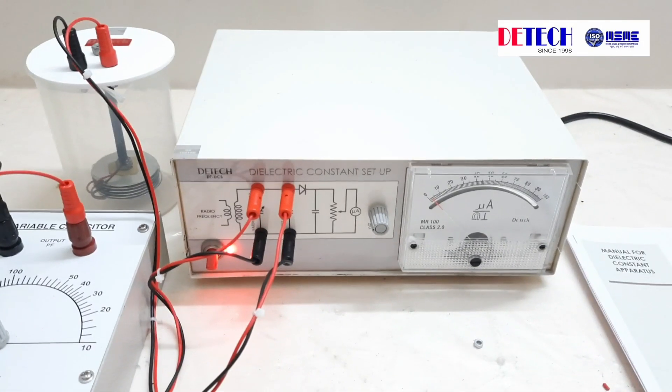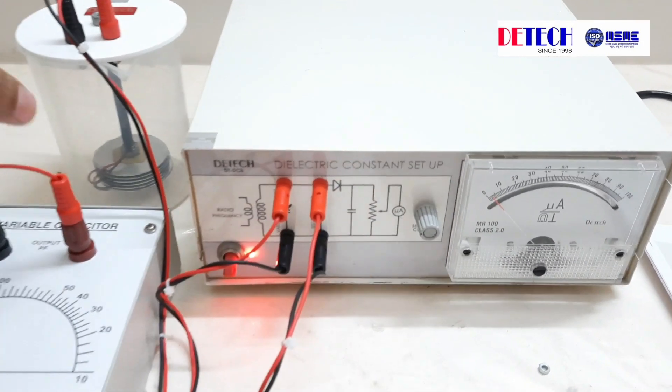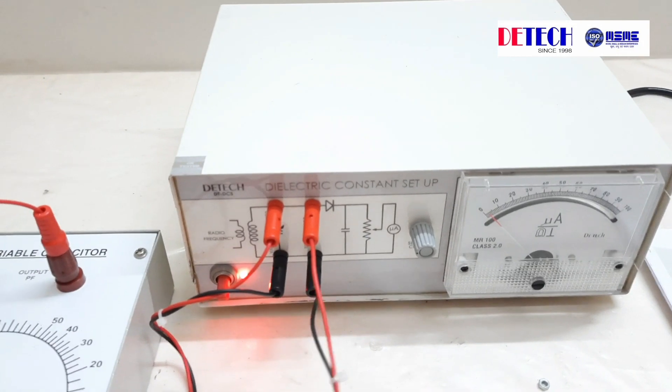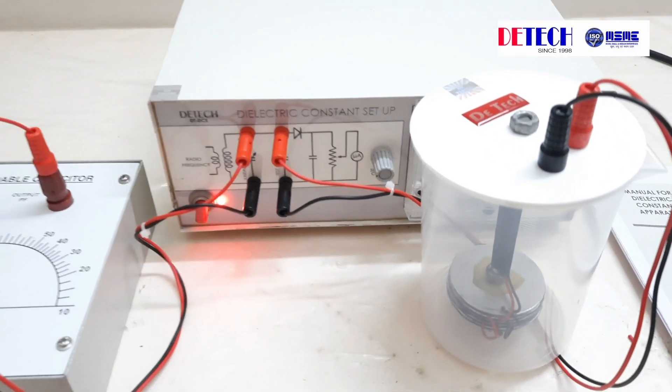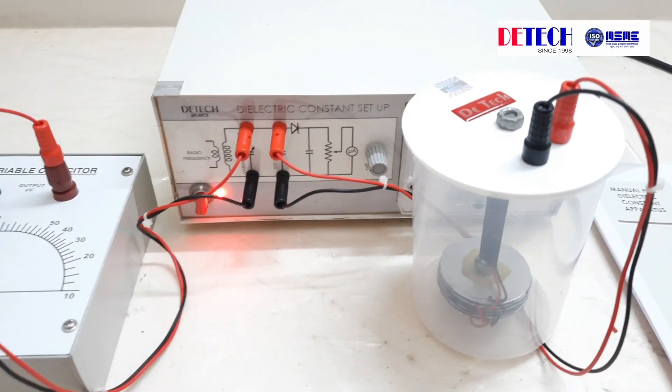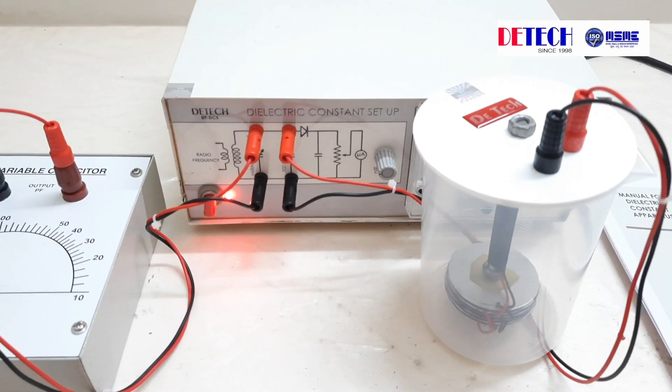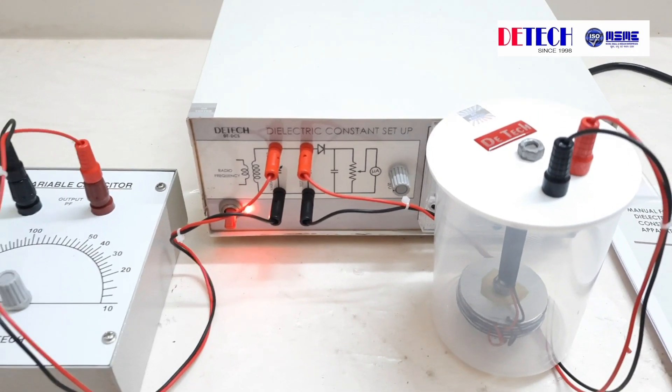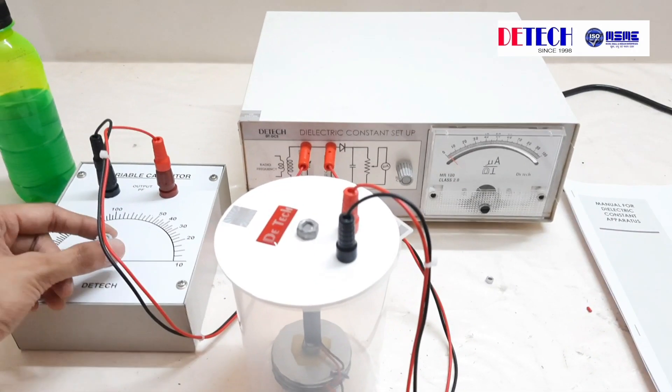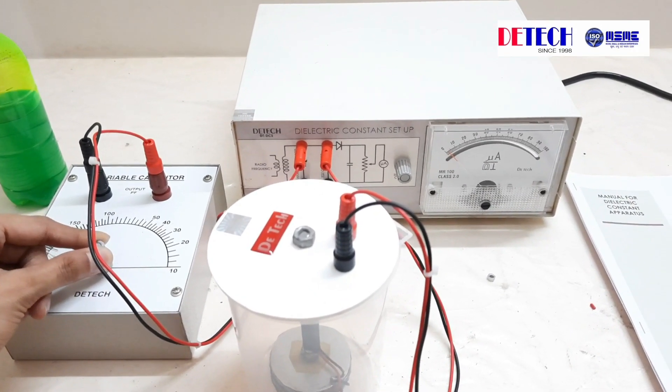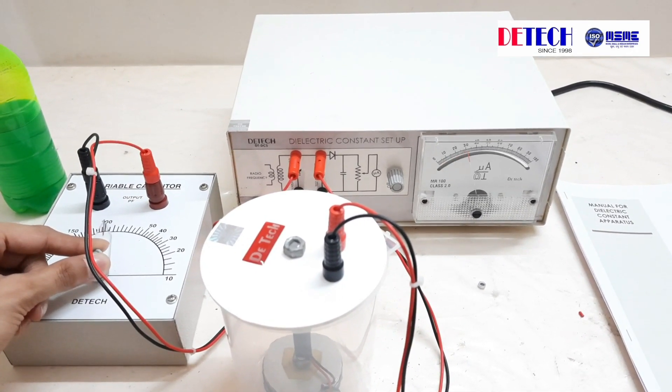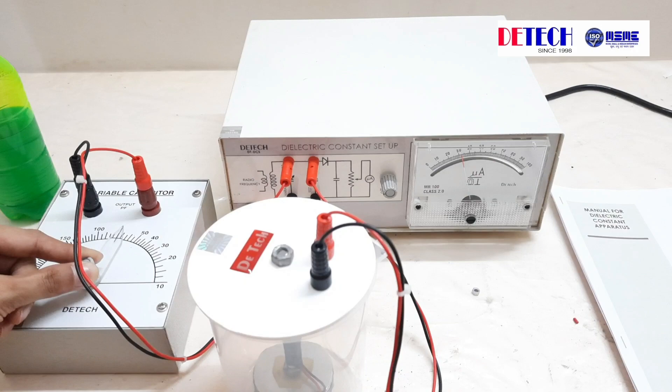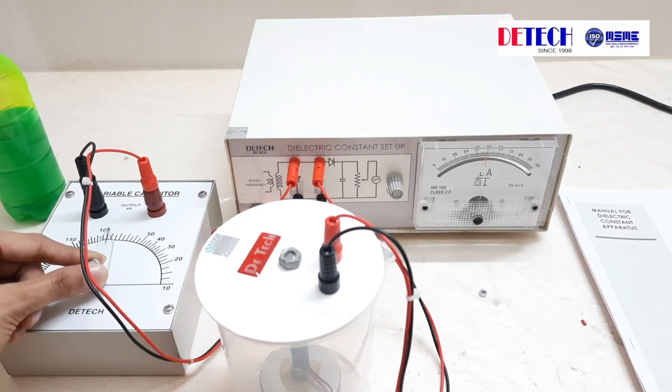But since we have a container and if we pour liquid in it, the liquid will be clinging to the capacitor, so we will first measure C3 in this case, which is without the dielectric. So we are now varying the variable capacitor to the maximum current at resonance.